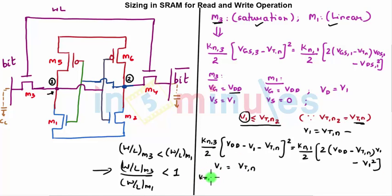Now I'll put V1 equal to Vtn. When I do that, this is what my equation will turn out to be: kn3 by 2 equal to Vdd minus twice Vtn the whole square, equal to kn1 by 2, 2, 2 will I'll cancel it right now only.